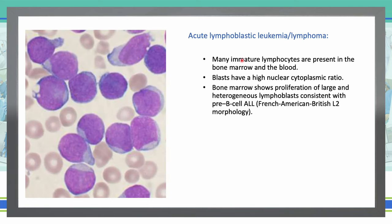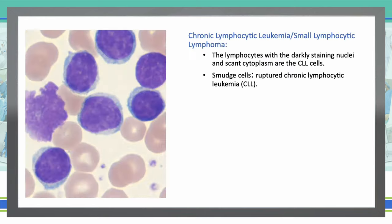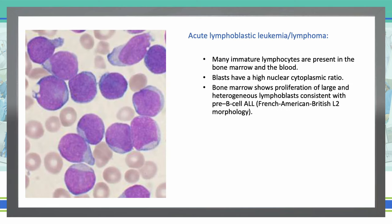Next we have acute lymphoblastic leukemia, where we can see many immature lymphocytes. The key difference between ALL and CLL is smudge cells: in CLL we will see smudge cells, and if you don't see any smudge cells, that is going to be ALL. Large and heterogeneous lymphoblasts are consistent with pre-B cell acute lymphoblastic leukemia.